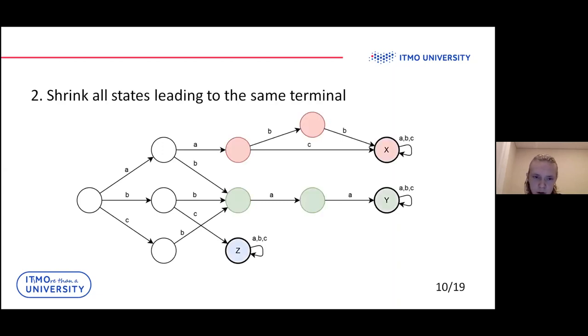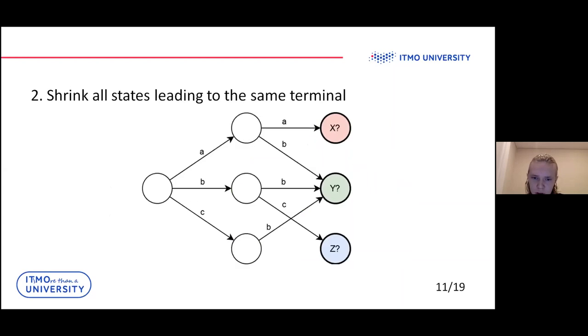First, we need to shrink all the states which lead to the same terminal and leave only one terminal for each rule. Here we can see the red one, the red states lead only to X rule. Green for Y rule. And the only rule leading to Z is the bottom one. Then we just shrink it and drop all the transitions for these states.